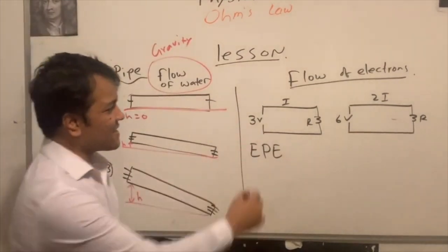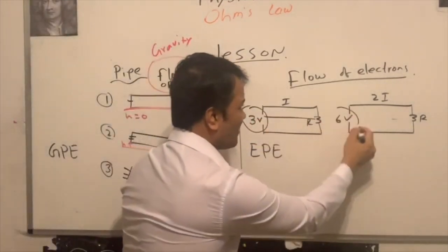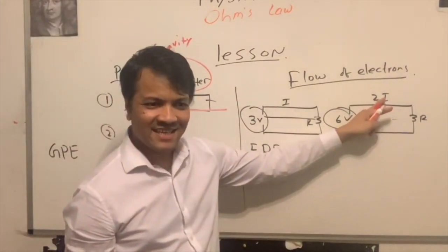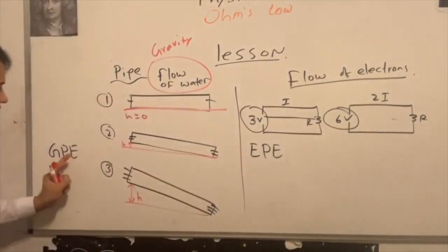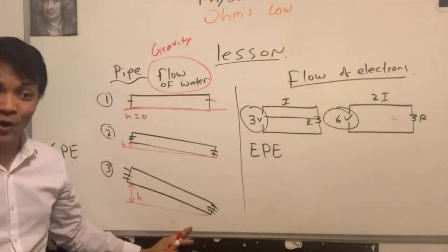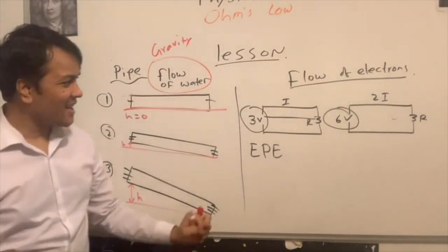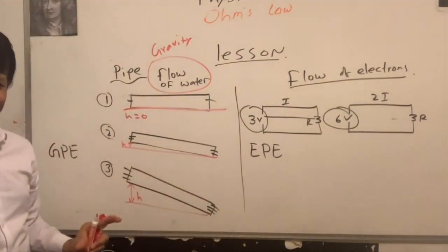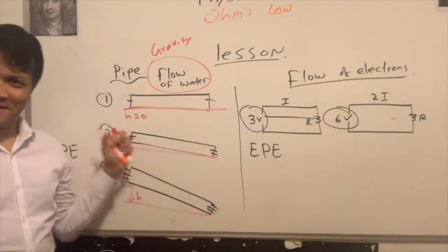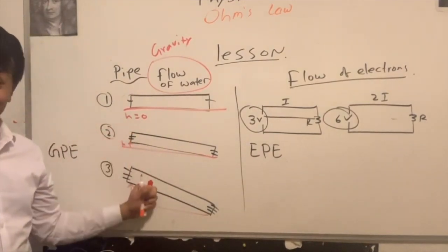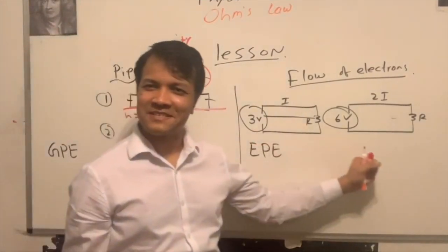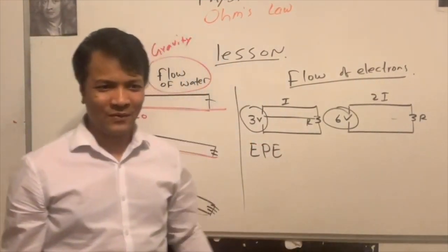If you increase electric potential energy by double, that increases the current by double. If you increase gravity, that increases the flow of water. You see the connection? If you increase the gravitational potential energy, that increases the flow of water. If you increase the electric potential energy, that increases the flow of current. Why? Because it increases the flow of electrons that carries the charge.